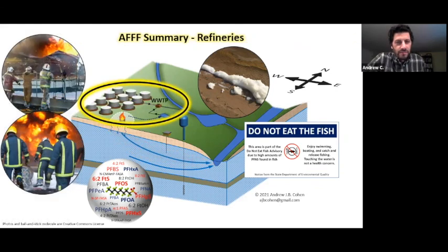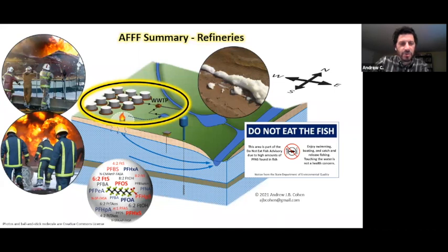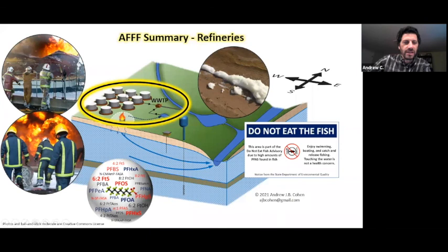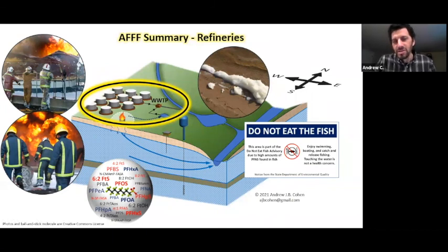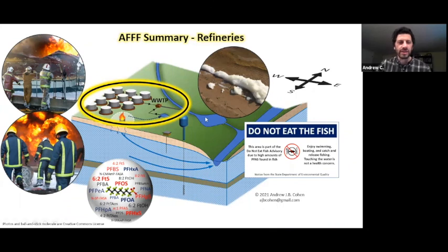They also use AFFF at refineries — essentially the same scenario, showing the layout of a refinery. An additional element here is the wastewater treatment plant: runoff water from the fire training area and from the berms around tanks all gets discharged to an on-site wastewater treatment plant. It has dissolved PFAS in it. However, those treatment plants weren't designed — and most still are not — to treat PFAS. So the PFAS basically gets discharged to the stream. You might not have foam, but you certainly have dissolved PFAS bioaccumulating in the lake and river.